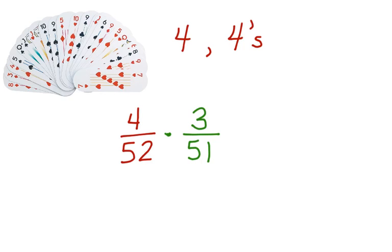Now, before we do this multiplication, let's simplify. We can simplify that by 4, and we will get 1 out of 13 times 3 over 51.